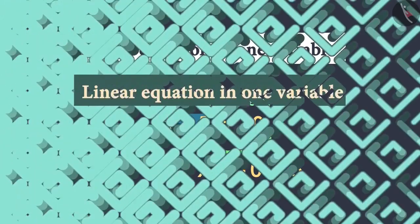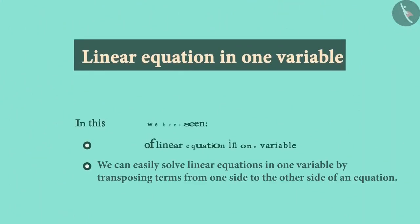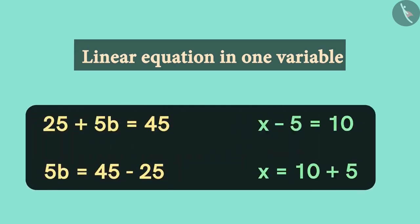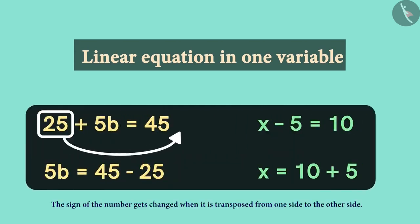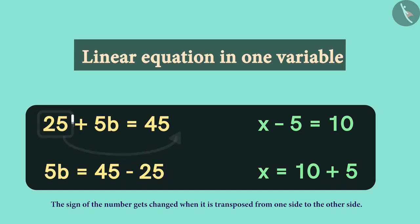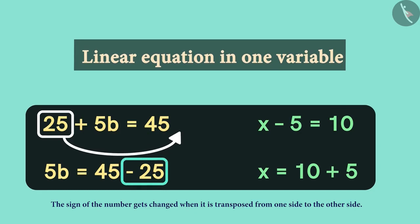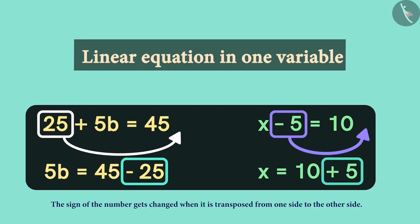To conclude, in this session, we saw that we can solve linear equations in one variable very easily and efficiently by transposing numbers to the other side. But always remember that while we transfer a number, we change its sign. If a number is a positive number on one side, after transferring it becomes negative. And if a number is negative on one side, it becomes positive on moving to the other side. This means addition becomes subtraction and subtraction becomes addition.